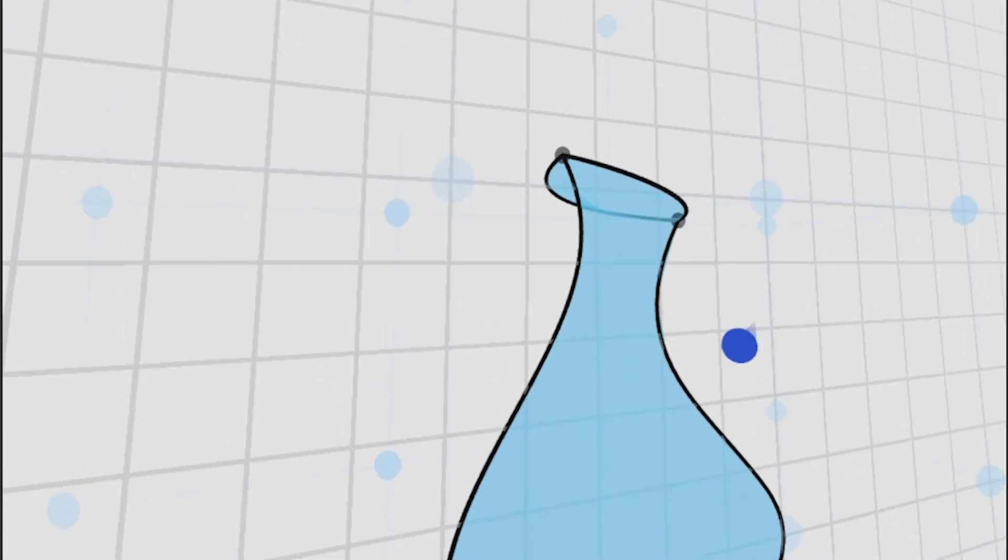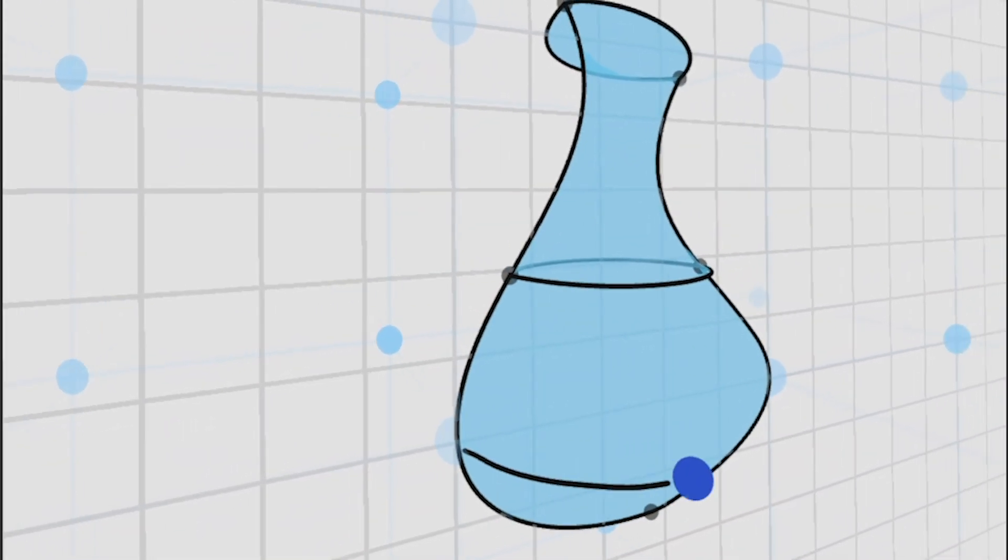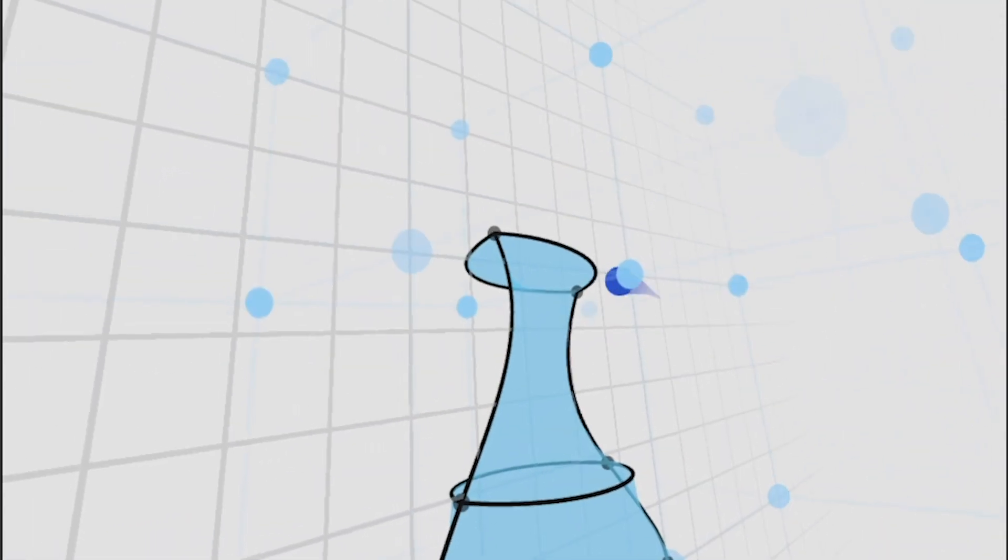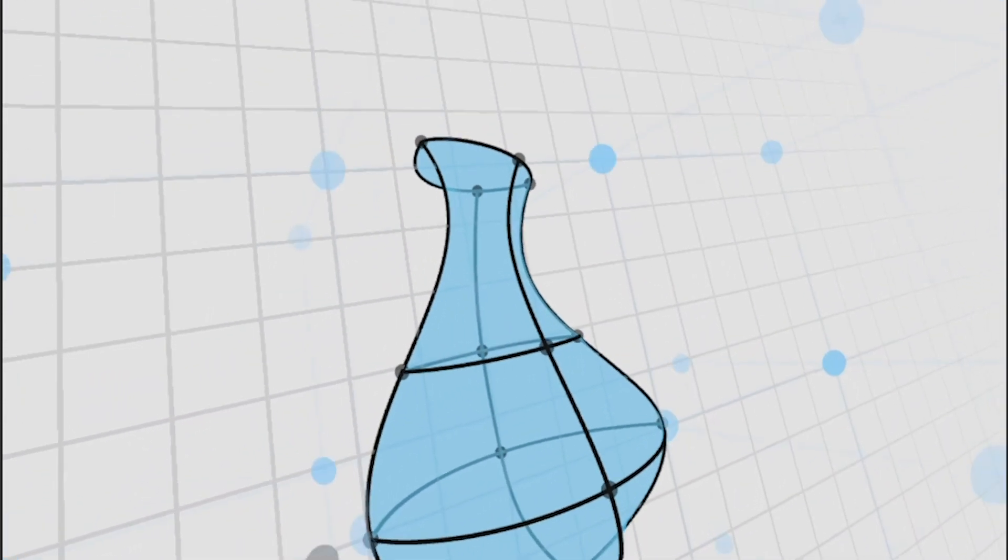We similarly detect appropriate cycles in the evolving curve network in real time to predictively create surface patches that match user design intent.